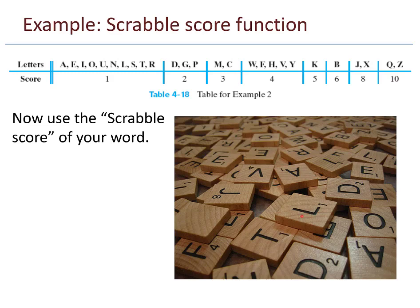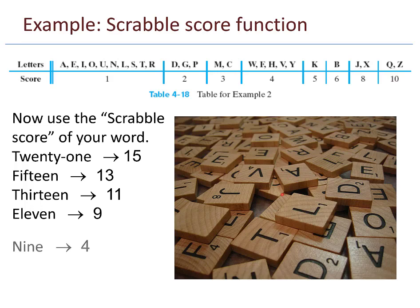A variation on this might be the Scrabble score function. Instead of counting the number of letters in the word, you make the word for the number, but then you treat it as though it was a word in the game of Scrabble. In the game Scrabble, different letters have different scores, different point values like you can see in the chart, and then you create the Scrabble score for your word.